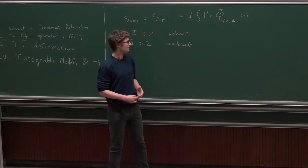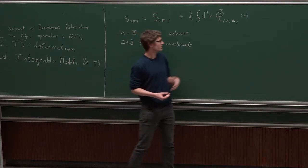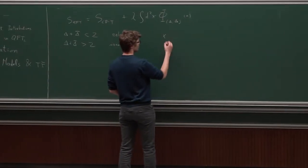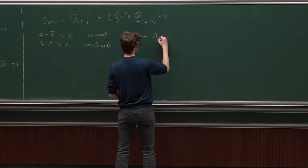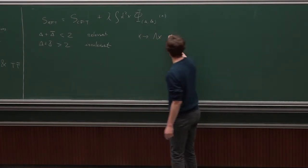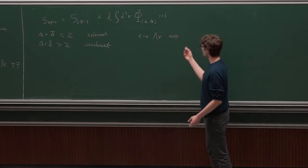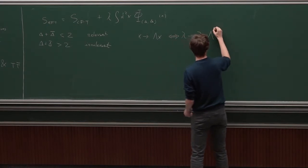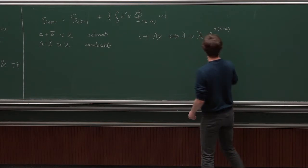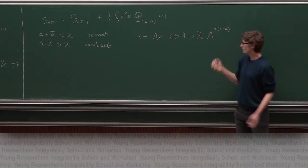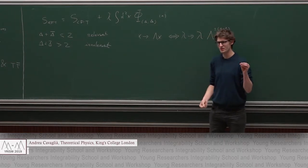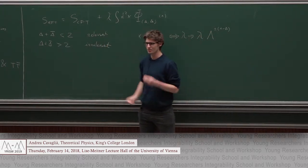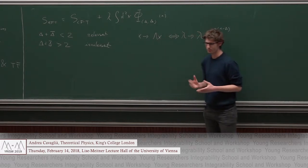The first obvious observation is that we lose scale invariance, because lambda will be a dimensionful parameter. If you just do a scale transformation, then by naive analysis you discover that this is equivalent to changing lambda to a redefined lambda. This tells you that when you zoom into short distances, it's equivalent to taking lambda smaller, so naively the initial CFT controls the short-distance behavior of this new theory.